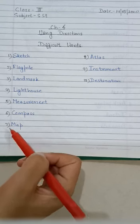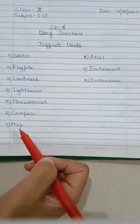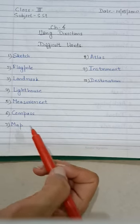The seventh word is map. M-A-P, map. Map is the drawing of the whole or a part of the earth's surface.